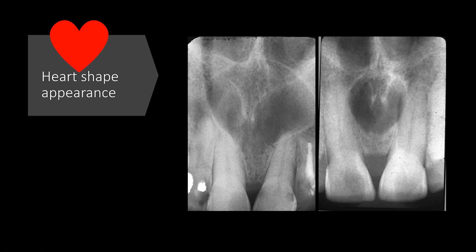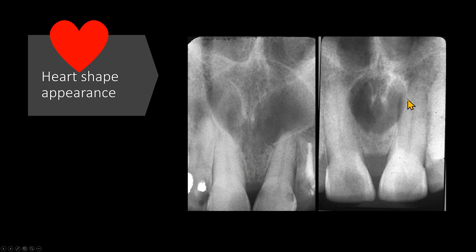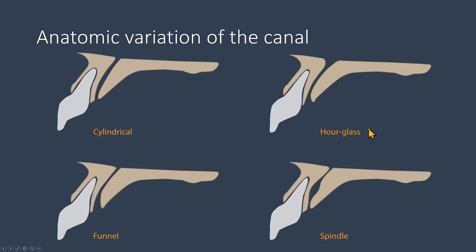These two radiographs show large nasopalatine duct cysts. This is the outline of the cyst — the outline is circular or oval. The superimposition of the anterior nasal spine gives this cyst a shape of a heart. I do not recommend you send a periapical radiograph as a greeting card to your loved ones — or maybe you should! Because these cysts are large, please note how the roots are separating more on this radiograph. On a CBCT scan in sagittal view, these are the different variations of the normal nasopalatine canal: cylindrical (uniform width), hourglass (wider at superior and inferior), funnel-shaped (wider at inferior, narrow at top), and spindle-shaped (wider at the central part). This spindle shape is a difficult appearance — it may mean an early stage of cyst formation or can be a variation of normal.